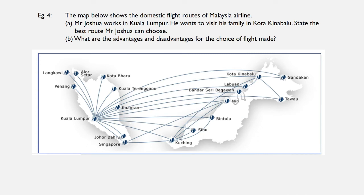Now we look at example four. The map shows the domestic flight routes of Malaysia Airlines. Mr. Joshua lives in Kuala Lumpur and wants to visit his family in Kota Kinabalu. The best route he can choose is the direct flight from Kuala Lumpur to Kota Kinabalu, as there is also an alternative via transit through Kuching. The advantages of the direct flight are that it saves time and cost, whereas the flight with transit takes longer and most probably the cost of the journey is also higher.